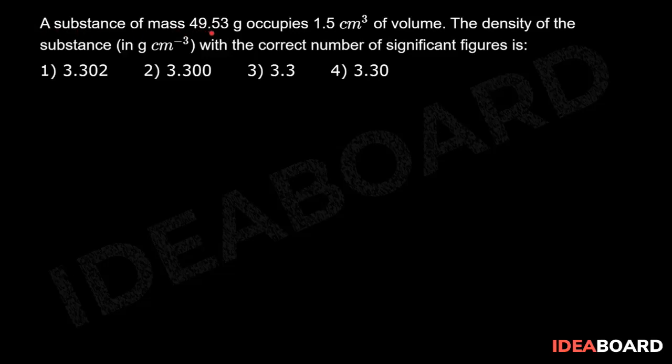A substance of mass 49.53 grams occupies 1.5 cm³ of volume. The density of the substance in grams per cm³ with the correct number of significant figures is: Now, density of a body is given as d equal to mass by volume.